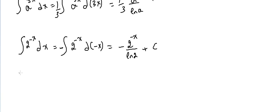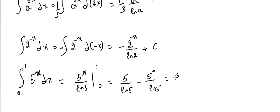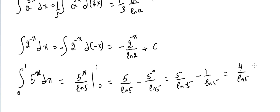Another example: the definite integral from 0 to 1 of 5^x dx. Since u is just x here, we directly get the answer: 5^x over ln 5, evaluated from 0 to 1. So it's 5^1 over ln 5 minus 5^0 over ln 5, which gives 5 minus 1 equals 4 over ln 5.